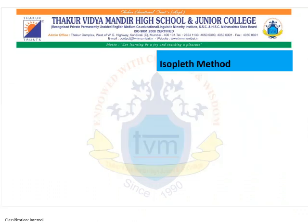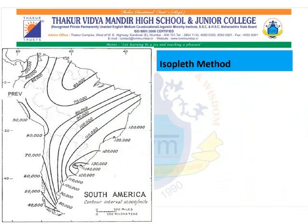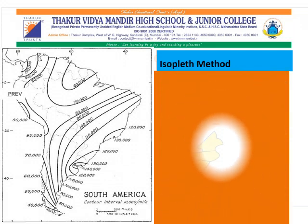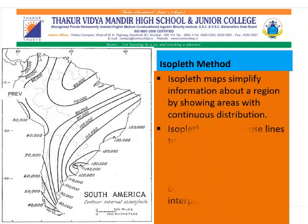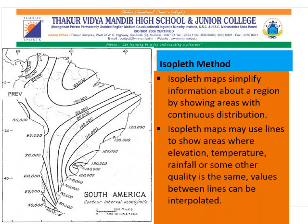In the isopleth map, when the distribution of a variable is continuous, the isopleth method is then used. Isopleth maps simplify information about a region by showing areas with continuous distribution. Isopleth maps may use lines to show areas where elevation, temperature, rainfall, or some other quality is the same.